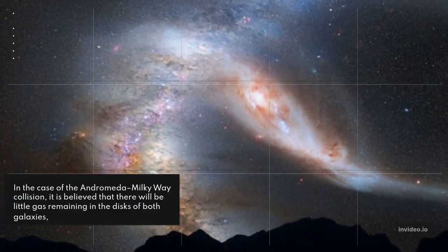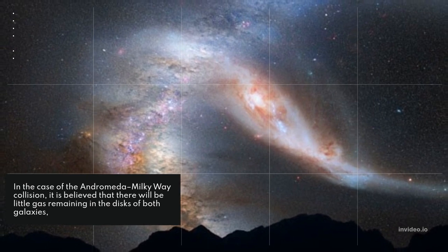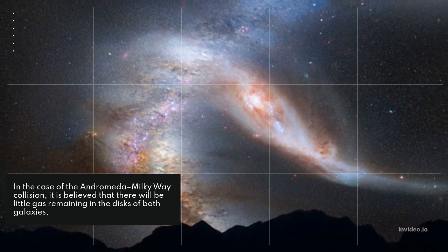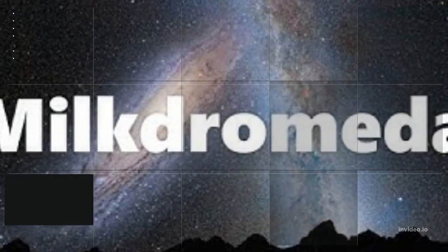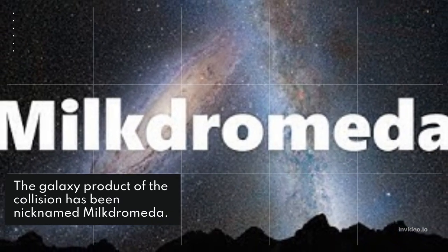In the case of the Andromeda-Milky Way collision, it is believed that there will be little gas remaining in the disks of both galaxies, so the mentioned starburst will be relatively weak, though it may still be enough to form a quasar. The galaxy product of the collision has been nicknamed Milkdromeda.